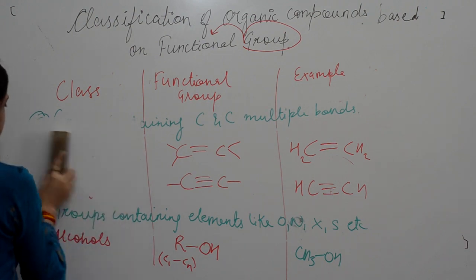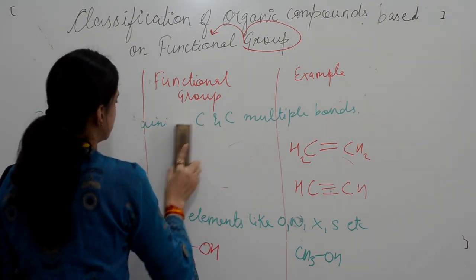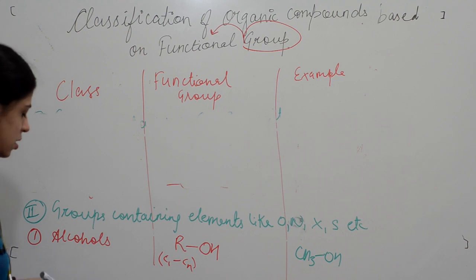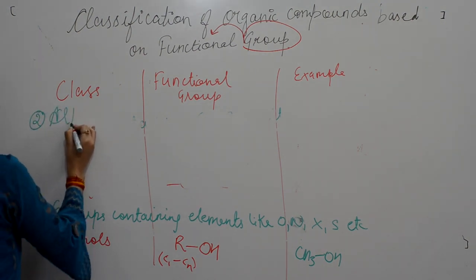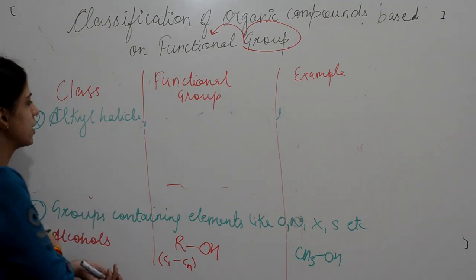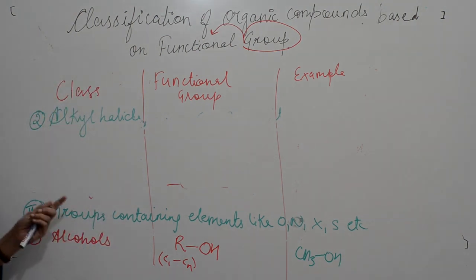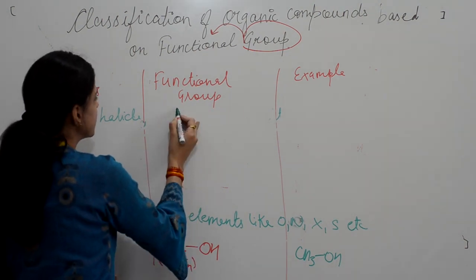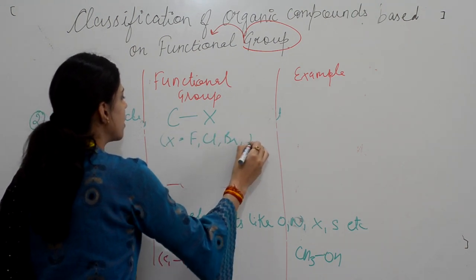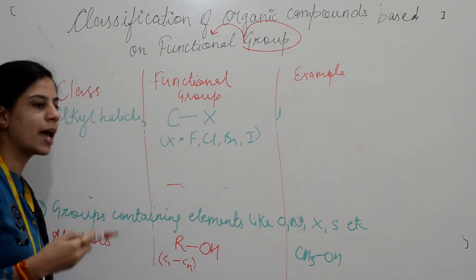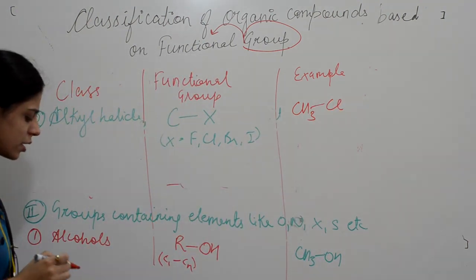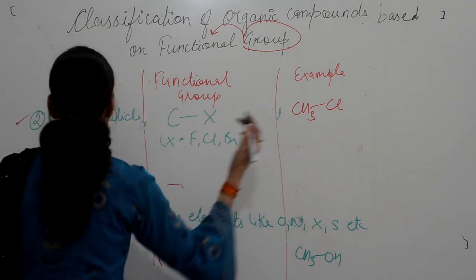The next in this category is alkyl halides. In alkyl halides, the compound contains a carbon-halogen bond. The halogens are fluorine, bromine, and iodine. Compounds containing carbon-halogen bonds are known as alkyl halides. The example can be chloromethane, or you can write CH3F, depending on the halogen.